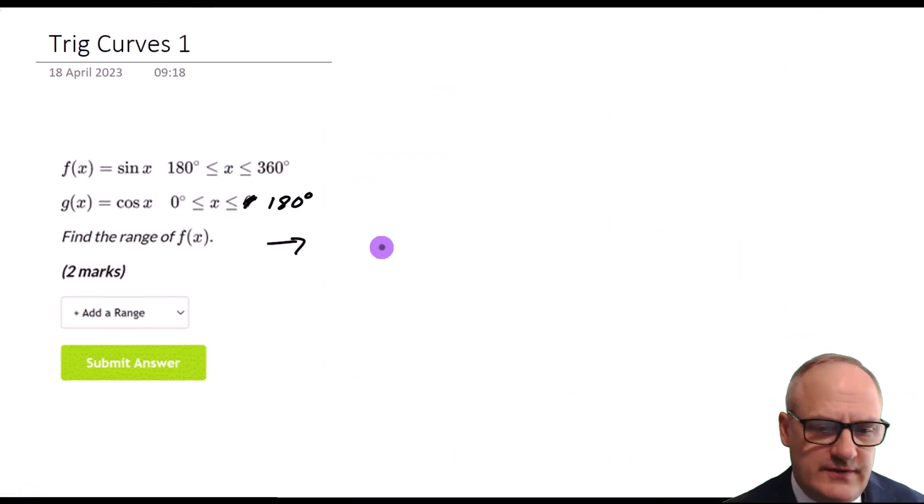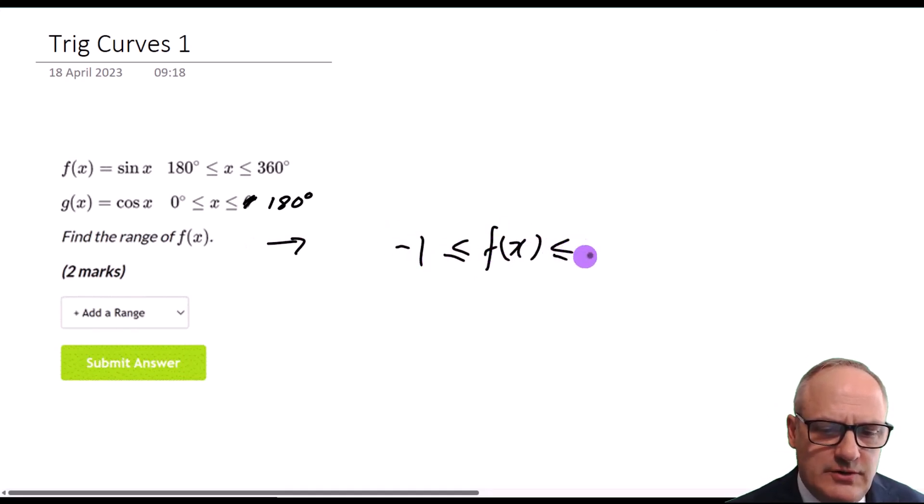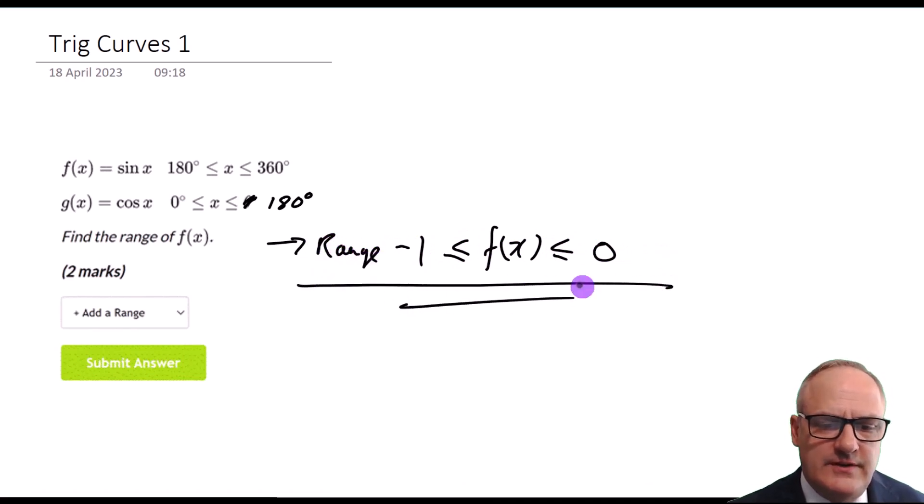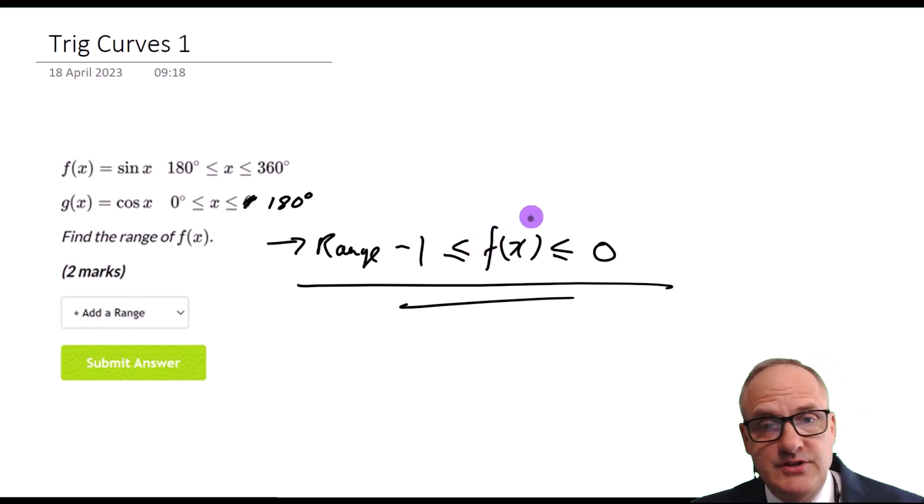So our range for f(x) is that f(x) is greater than or equal to minus 1 and less than or equal to 0. Or you might say minus 1 is less than or equal to f(x) is less than or equal to 0. It's basically between minus 1 and 0.